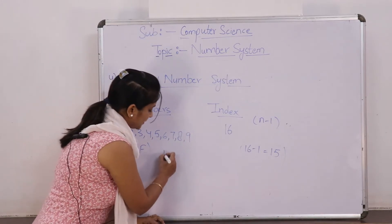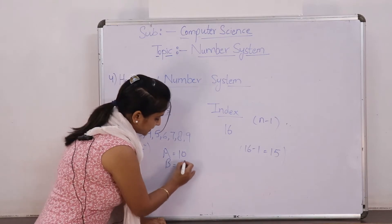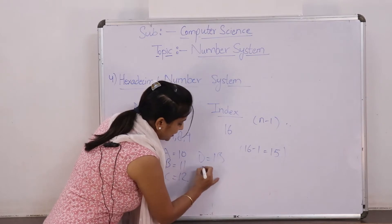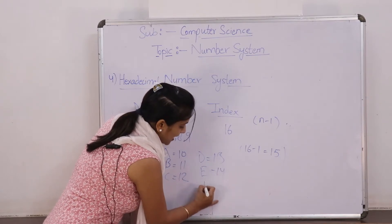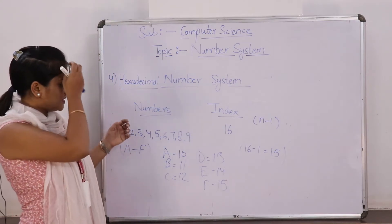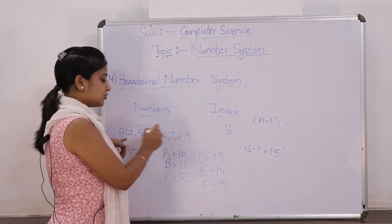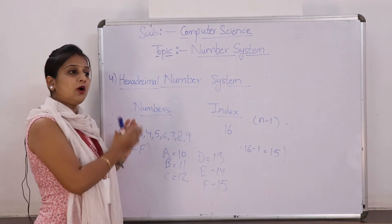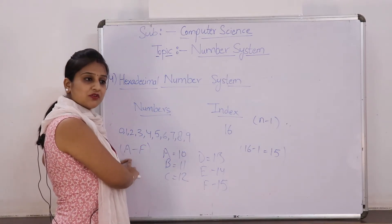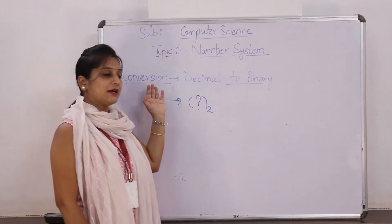To represent number 10, we use the alphabet A. B represents 11, C represents 12, D represents 13, E represents 14, and F represents 15. So in the hexadecimal number system, numbers go from 0 to 9, and then from 10 to 15 we represent them with alphabets A through F.